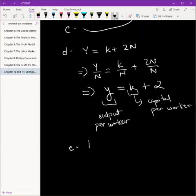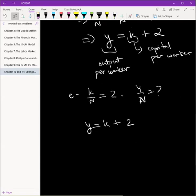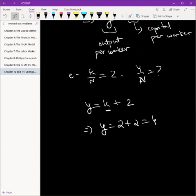Part E: Suppose K by N is 2. We have to find out what's the value of Y by N. Easy enough. I mean, we already have this. And we know K by N is 2, which is this small k or big K by N. So Y equals 2 plus 2 equals 4. And that is it. So basically when, once again, think of the economic implication. What does this mean?